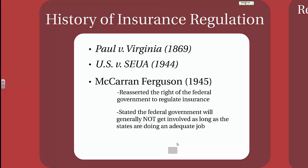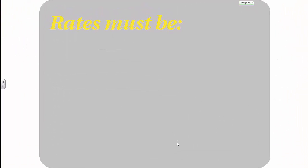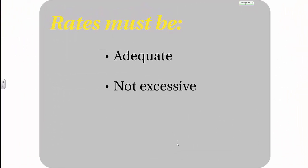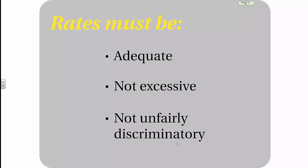I'll mention throughout this semester and the surplus lines and reinsurance class that the threat of a repeal of McCarran Ferguson dictates many of the behaviors of insurance companies today. Nearly all states quickly passed rating laws after McCarran Ferguson was passed. The rating laws stated rates must be adequate, not excessive, and not unfairly discriminatory. We'll discuss these once we get to rate making in our discussions of regulatory activities.